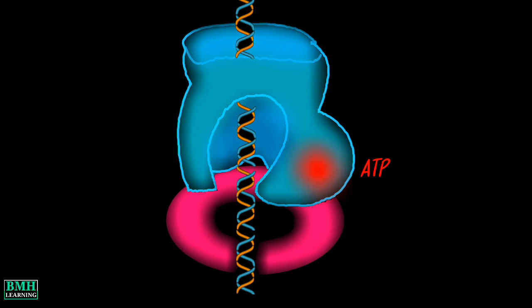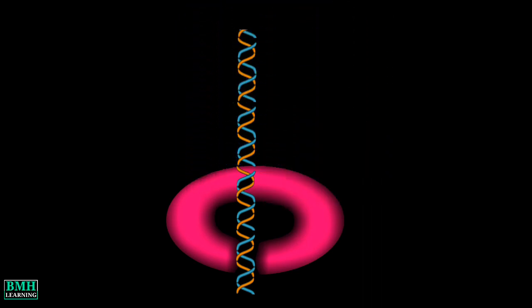The binding of primer template DNA activates ATP hydrolysis by clamp loader, leading to ejection of the clamp loader. In the final step, DNA polymerase binds the clamp and starts the DNA replication.